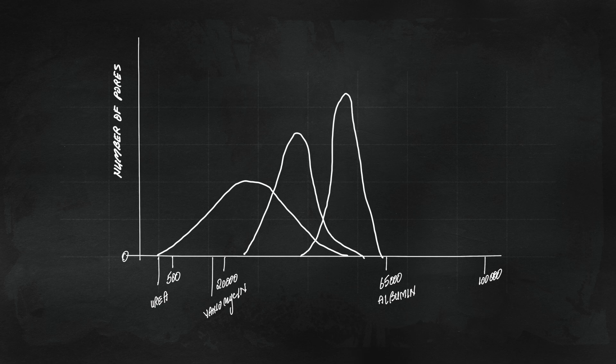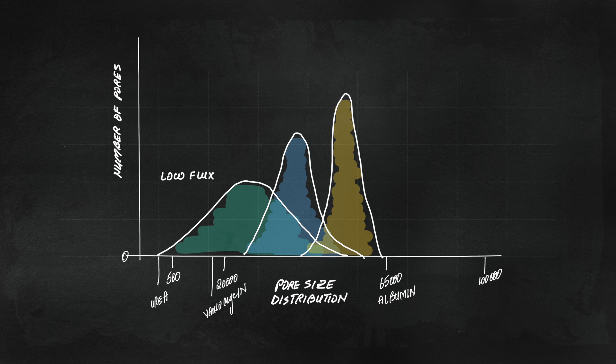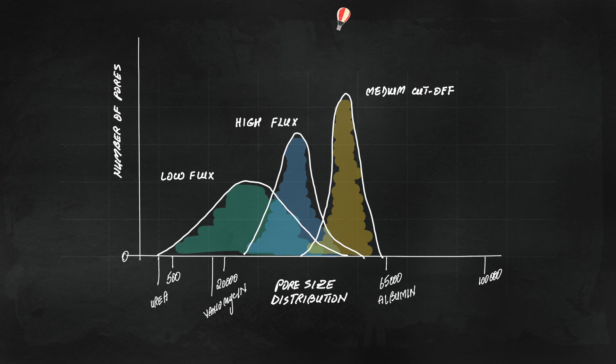The main determinant of a particular dialyser's handling of solutes is the pore size distribution. Low flux membranes have low ultrafiltration coefficient, typically less than 15 mL per mmHg per hour, such as the cellulose or cuprophan-based membranes. Whereas the high flux and the medium cutoff membranes have larger pores, with the medium cutoffs having narrow distribution of large pores.